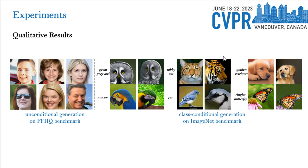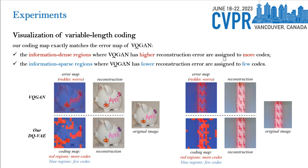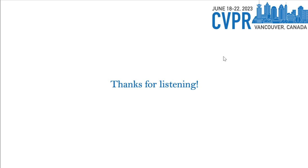We show some generation samples of our model. Then, we visualize our variable-length coding. We can observe that our coding map exactly matches the error map of VQGAN. Specifically, the information-dense regions where VQGAN has higher reconstruction error are assigned more codes. Thanks for listening.